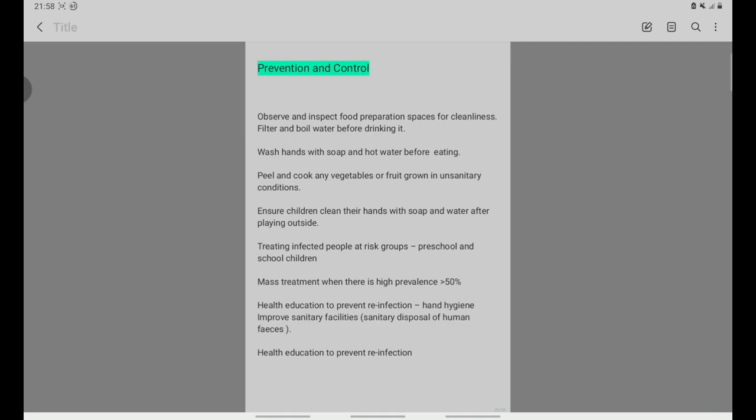Prevention and control: prepare food with clean, filtered water. Wash hands with soap and hot water before eating. Peel and cook fruits and vegetables grown in unsanitary conditions. Treat preschool and school children, the risk groups, with mass treatment using antihelminthic drugs.